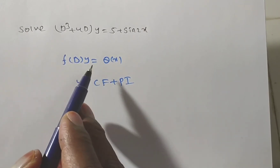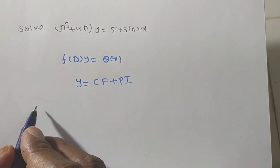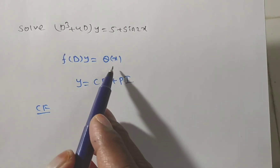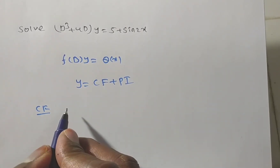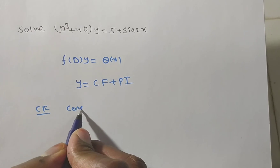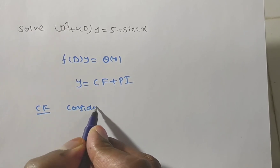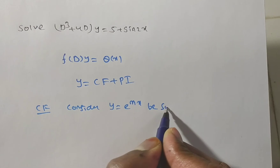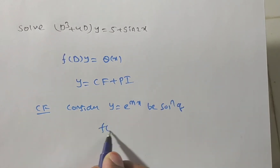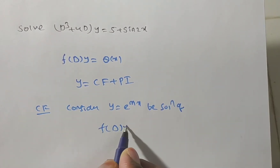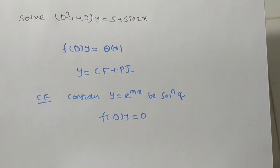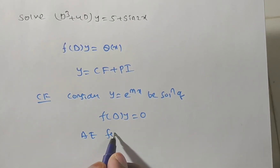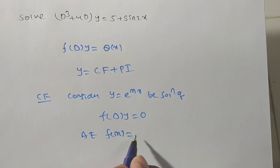This is in the form f(D)·y = Q(x). To get the complementary function, we equate Q(x) to 0, and we consider y = e^(mx) as a solution of f(D)·y = 0. Then we get the auxiliary equation.